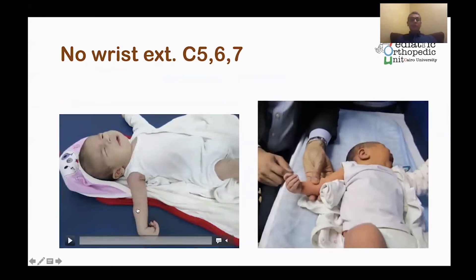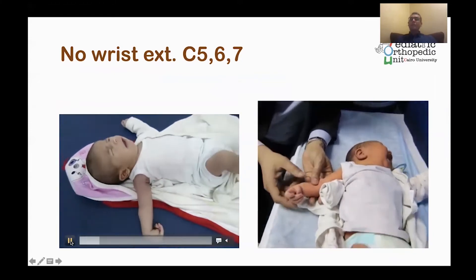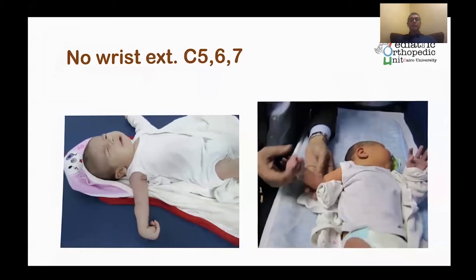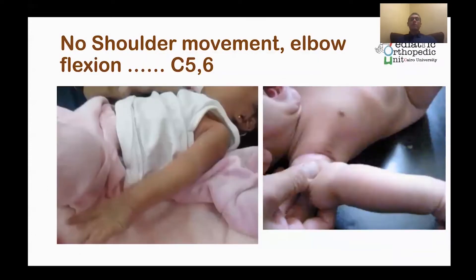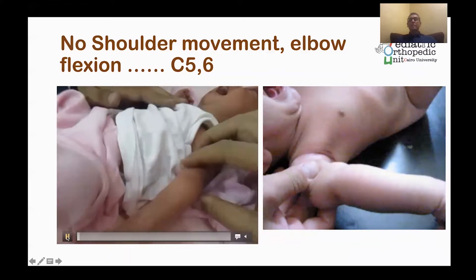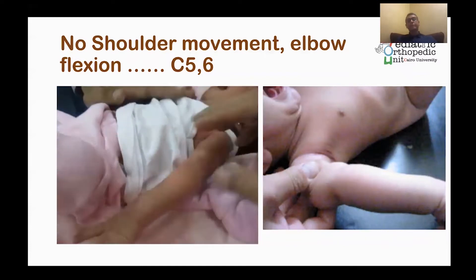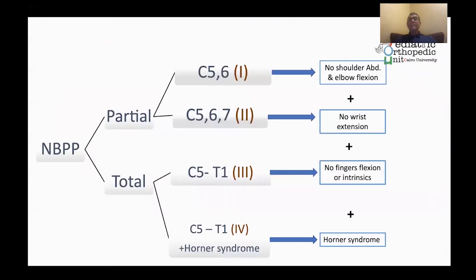If there is good hand function, we look at the wrist. If there is no active extension of the wrist, this is extended partial injury C5-6-7. If there is good wrist extension, we look at the shoulder and elbow — if there is no movement, this is partial brachial plexus palsy affecting C5-6 only. It is a clinical diagnosis. EMG has no role early on and should be done at least three weeks of age.